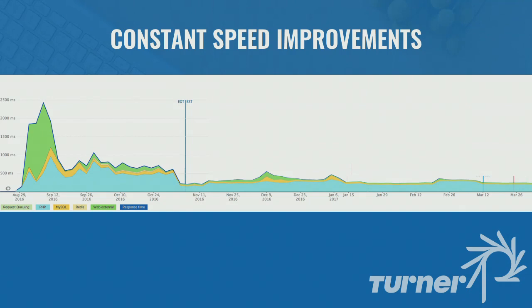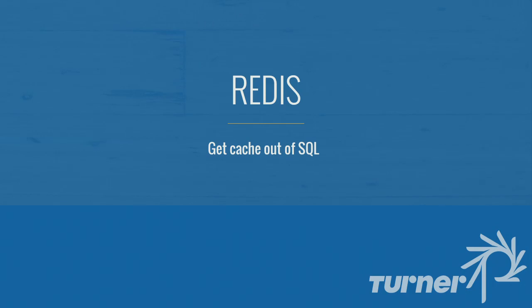As Toby mentioned, we wanted to get our cache out of SQL — and we learned SQL is not the best place to store a cache. About halfway through our optimizations we were looking at New Relic. If you don't have it, get it or another high-performance profiling application — it will save your life, because you don't know what to fix unless you know what's happening in production. There are going to be problems in production that will never occur in your other environments just because of the scale of traffic.